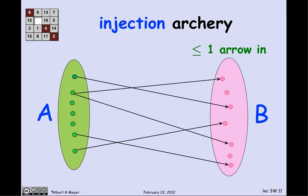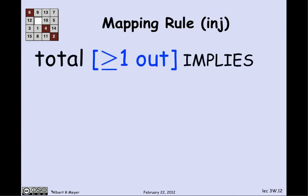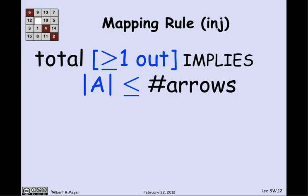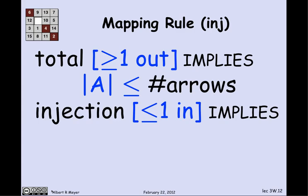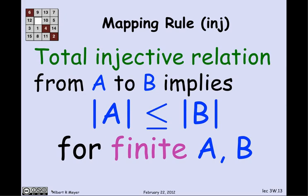The same argument goes for injections. With an injection there's at most one arrow in to each element. If the function is total, there's at least one arrow out of everything, so the size of A is less than or equal to the number of arrows. And since it's an injection with at most one arrow into each element of B, the number of arrows is less than or equal to the size of B. Putting those together: if you have a total injective relation from A to B, then |A| ≤ |B| for finite A and B. Whenever there's a total injective relation, there's also a total injective function — I'll leave that as a class exercise.